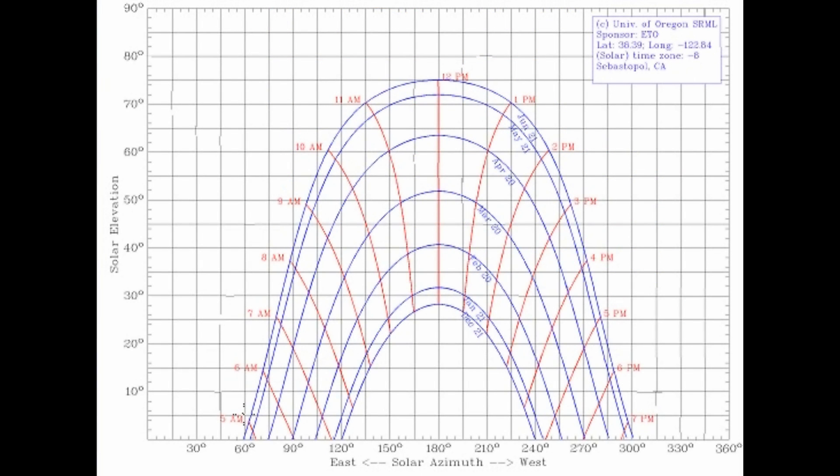On the sun path chart, the largest arc is for June 21st, the summer solstice. To find the sun's altitude on the summer solstice, we look for the highest point on the June 21st arc, then look towards the y-axis to read the elevation value. For Sebastopol, California, it looks like the summer sun's altitude is about 75 degrees.